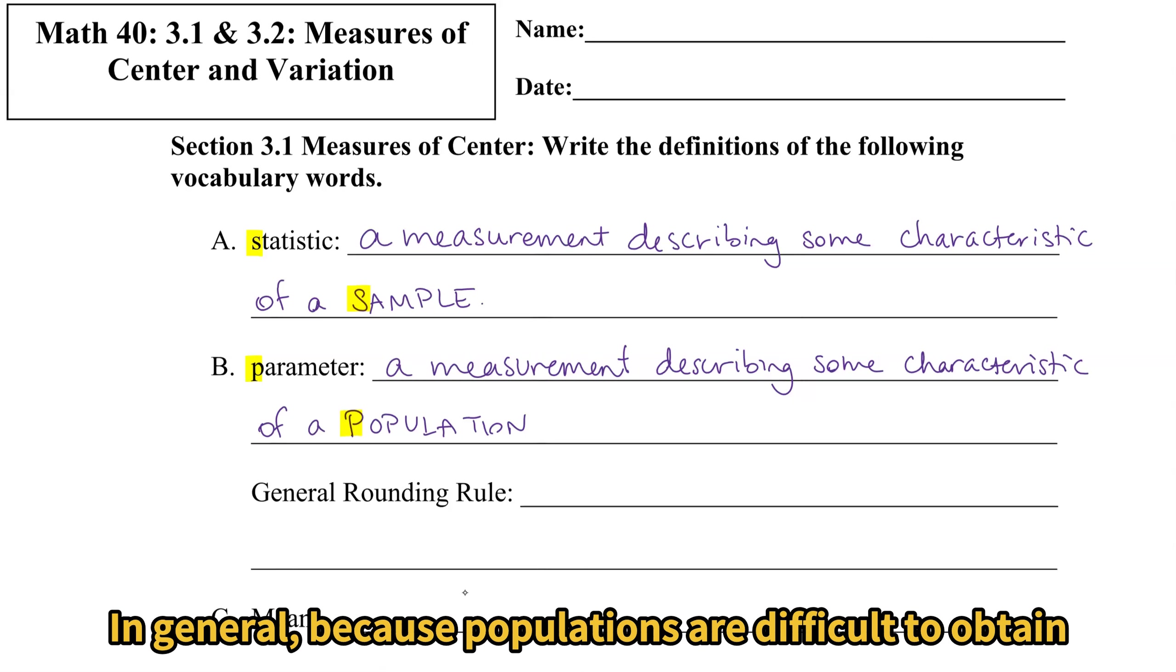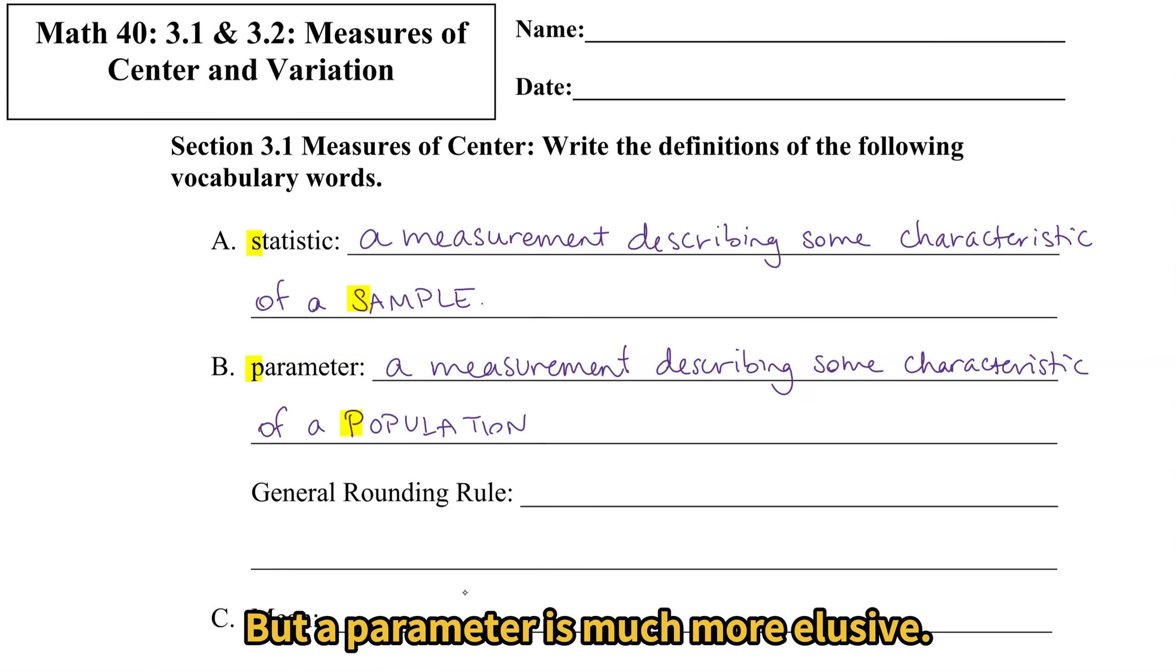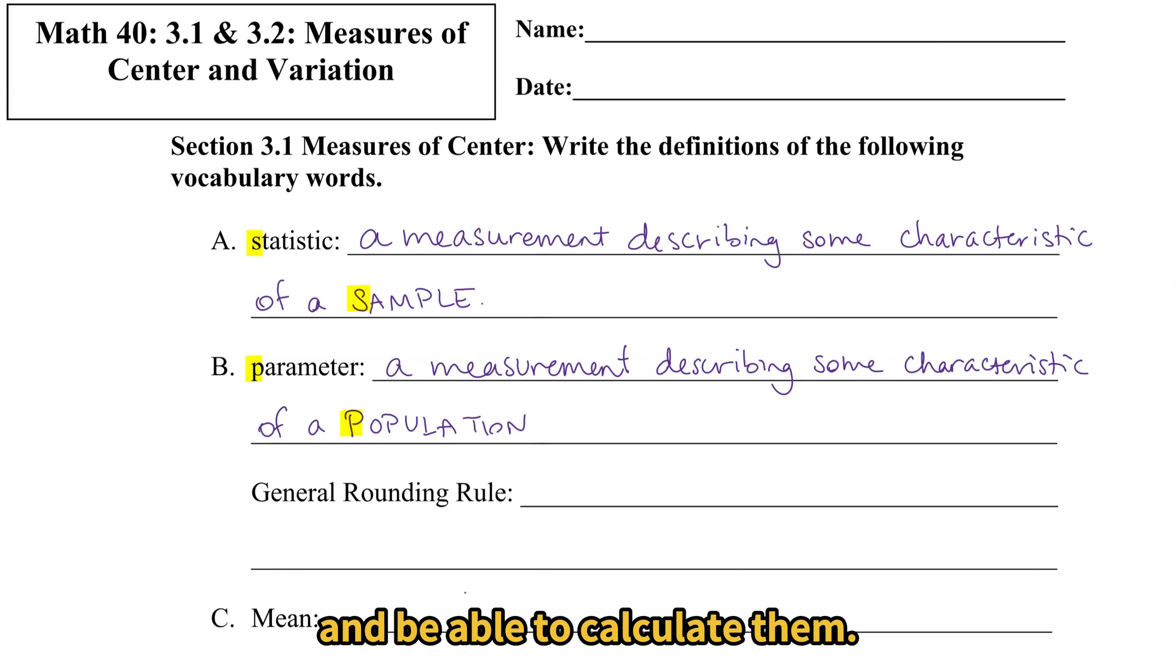In general, because populations are difficult to obtain all the data from, we usually can easily find a statistic, but a parameter is much more elusive. If our population is small though, we can talk about population parameters and be able to calculate them.